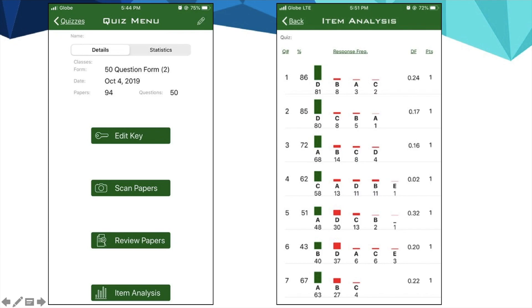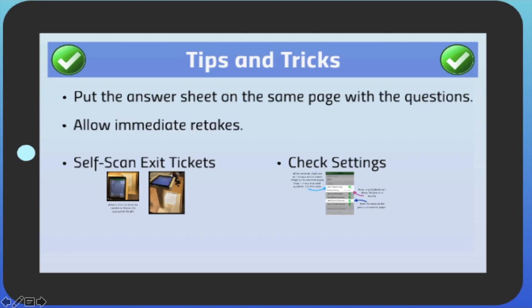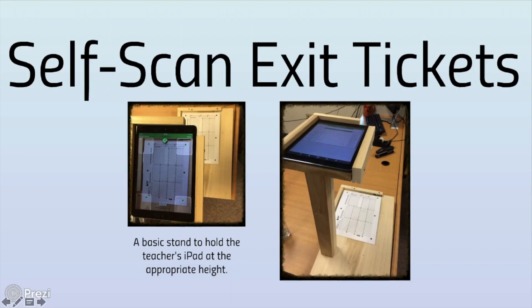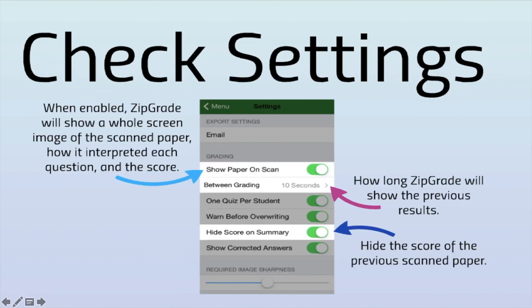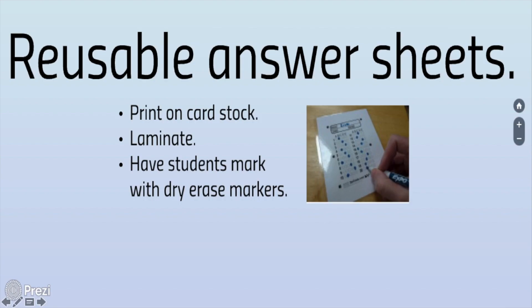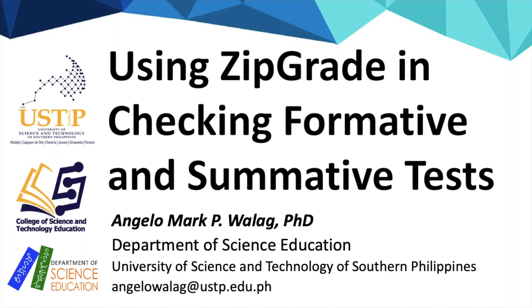Now let's go to tips on maximizing your ZipGrade account. Let's start with self-scan exit tickets. You can ask a local fabricator or a carpenter to design a stand to hold your phone or tablet for more natural checking. You can also modify the settings to suit your needs, like whether you want to show the paper on the scan, how long the results are shown, or whether you want to hide the scores of the previously scanned paper. You can also use reusable sheets by laminating them and asking students to use whiteboard markers.